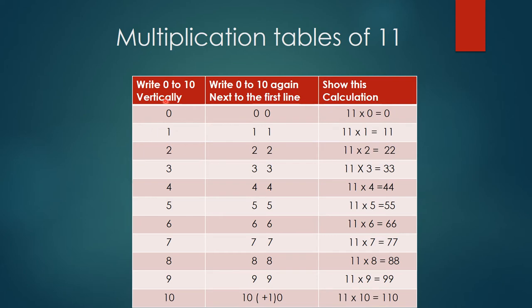Okay, now ask the children to write 0 to 10 vertically: 1, 2, 3, 4, 5, 6, 7, 8, 9, 10. The kids will be able to do this. Then tell them next to this first line, ask them to again repeat the same pattern of numbers. 0 is 0 only here, so 1, 2, 3, 4, 5, 6, 7, 8, 9, 10 all the way up to 10.